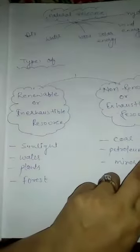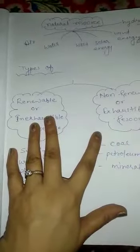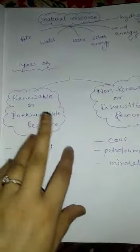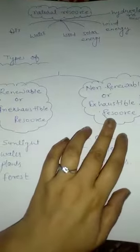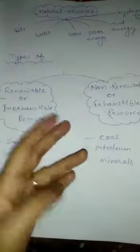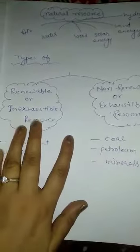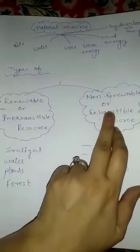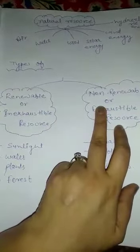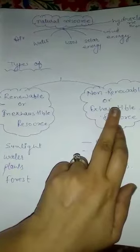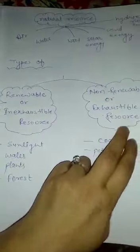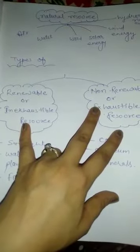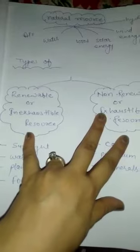Some natural resources will get exhausted if we do not use them properly — these are called exhaustible or non-renewable resources. On the other hand, resources which do not get exhausted as we use them are called renewable or inexhaustible resources.